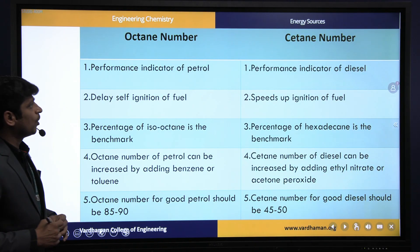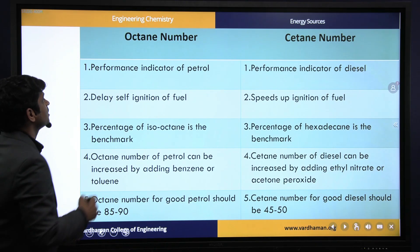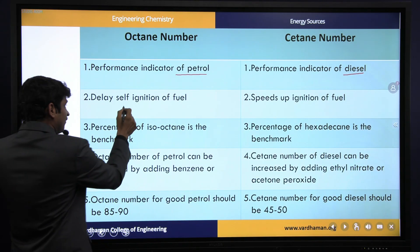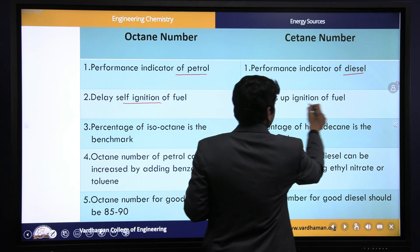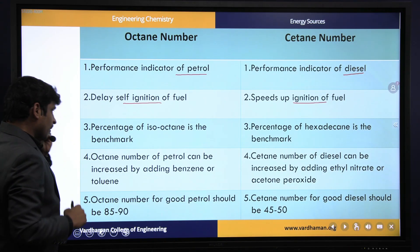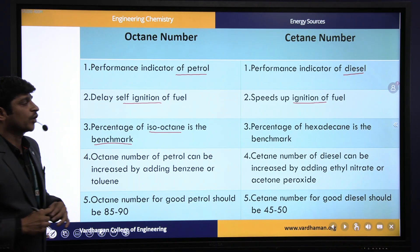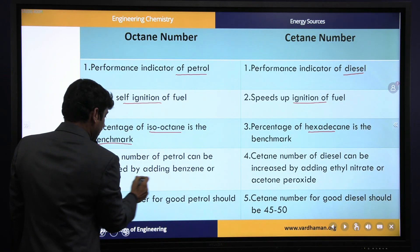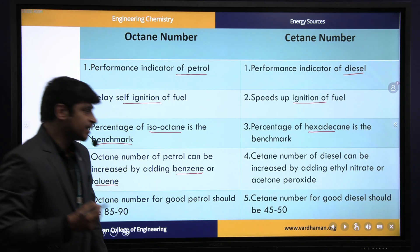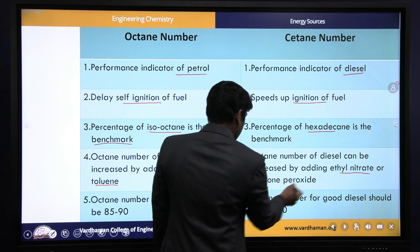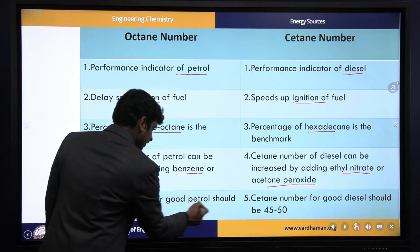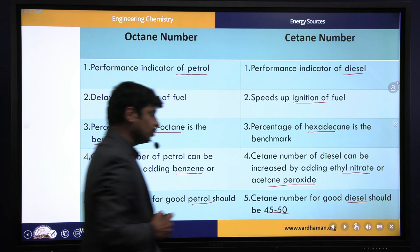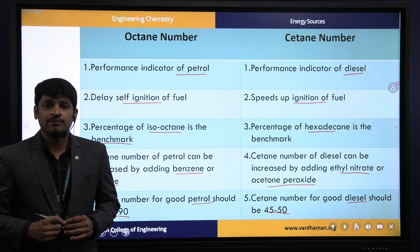The differences between octane and cetane number are: octane number is a performance indicator for petrol while cetane number is for diesel. Octane number delays self-ignition of fuel whereas cetane number speeds up ignition. The benchmark for octane number is the percentage of isooctane; for cetane number it is the percentage of hexadecane. Octane number of petrol can be increased by adding benzene or toluene, while cetane number can be increased by adding ethyl nitrate or acetone peroxide. A good petrol should have octane number in the range 85–90, and a good diesel should have cetane number in the range 45–50.